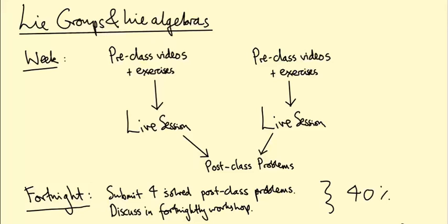There's going to be more than you can do, really. I'm going to set lots of problems and you can pick which ones you think are best. So each fortnight, you will need to submit four of these solved problems. And we'll discuss these in an additional live session that I'm going to call workshop that we run every fortnight after you've handed them in. So this is the coursework component that amounts to 40% of the grade for this course.